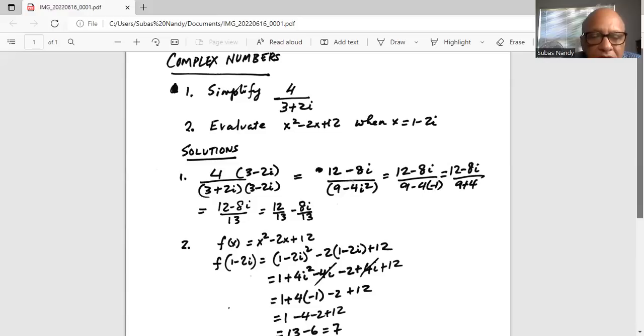Then I distribute the minus 2 in the next term. So minus 2 times 1 is minus 2. Minus 2 times minus 2i, 2 minuses make it a plus, plus 4i plus 12. Then we cancel the minus 4i with the positive 4i. So we are left with 1 plus 4i squared minus 2 plus 12.